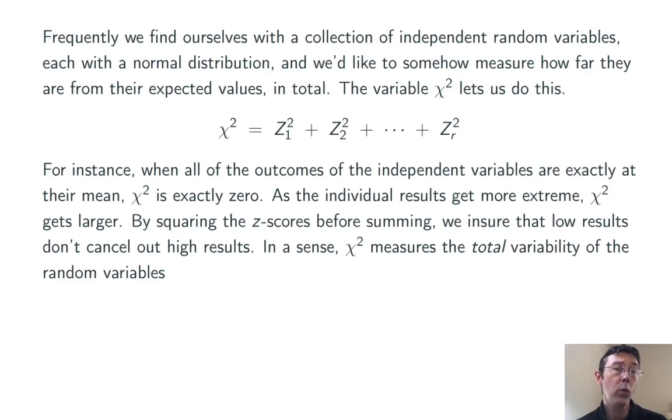Notice that when we square these results, we make everything positive, so we're going to avoid canceling out low values and high values. In a sense, chi-squared is going to measure the total variability in these random variables.